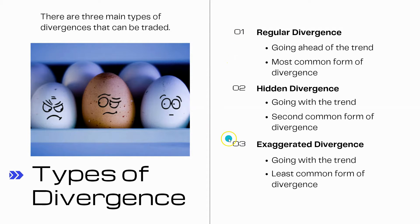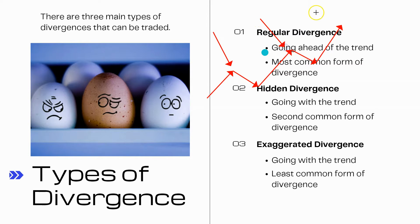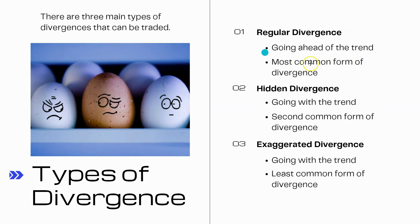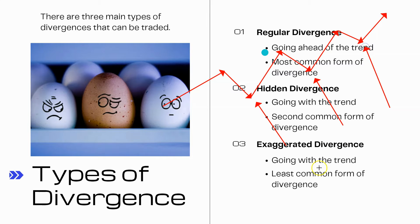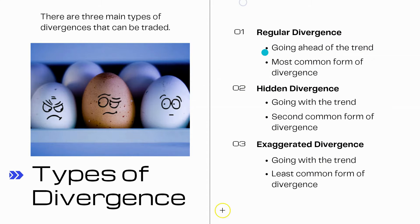With regular divergence, what we're doing is going ahead of the trend — looking to see these potential pullbacks before they happen. These are the most common form of divergence. Hidden divergences go with the trend; they show you where the trend could go ahead and resume so you can hop on at a good area and ride it up. Exaggerated divergences also go with the trend, and I'll get into those in more detail in a moment.